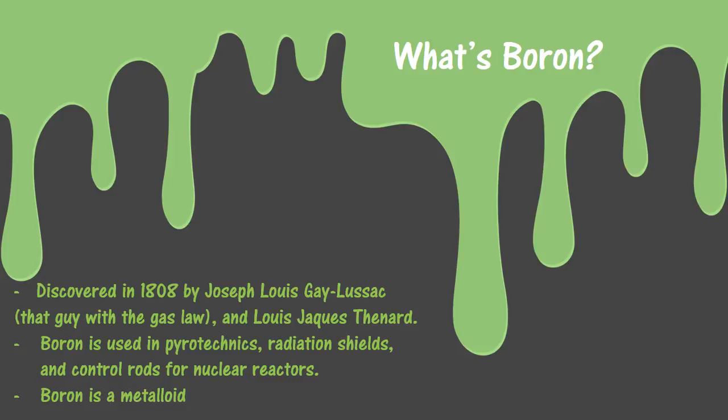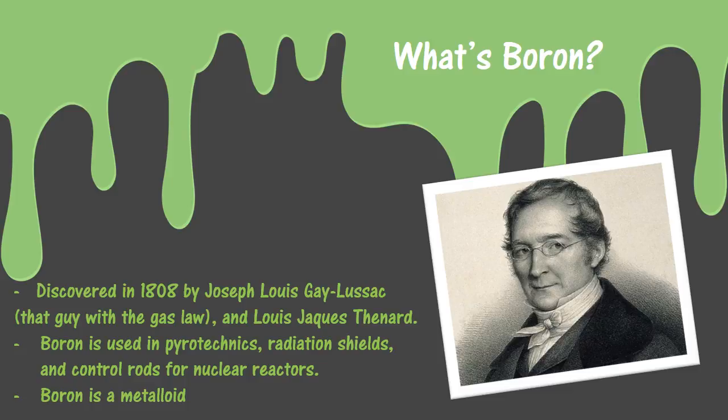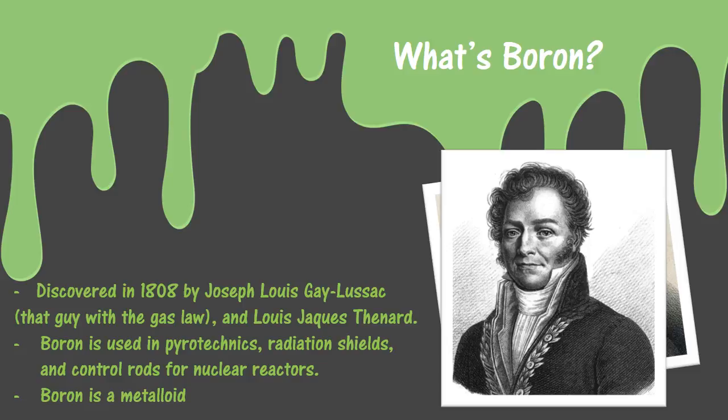What's boron? Boron is an element on the periodic table. It was discovered in 1808 by Joseph Louis Gay-Lussac — the same guy that has the gas law named after him — and another guy, Louis Jacques Thénard. Boron is used in a lot of things. The ones I thought were really interesting were pyrotechnics — fireworks, concerts, or movie explosions — it usually produces a green flash, so any kind of green fireworks has boron in it. Also radiation shields and control rods for nuclear reactors. And it is a metalloid.